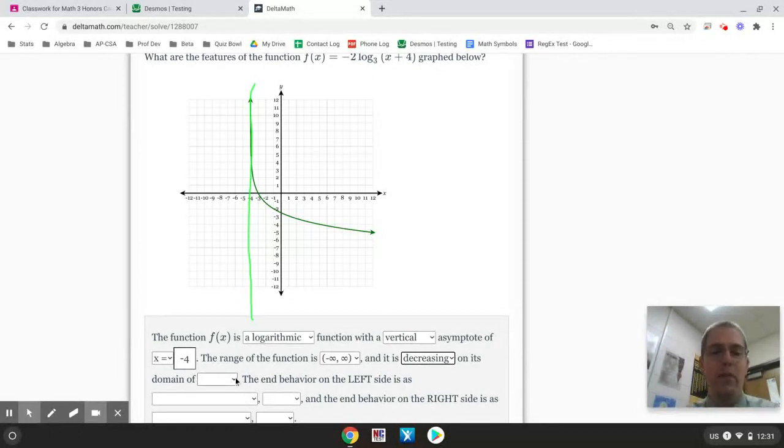and I have to tell what the domain of this function is. Now, the domain is my x values. My x values are restricted. They start at negative 4 on this side, and then they go to infinity. So, the x values start at negative 4 and keep going to infinity. So, the domain needs to be negative 4 to infinity.